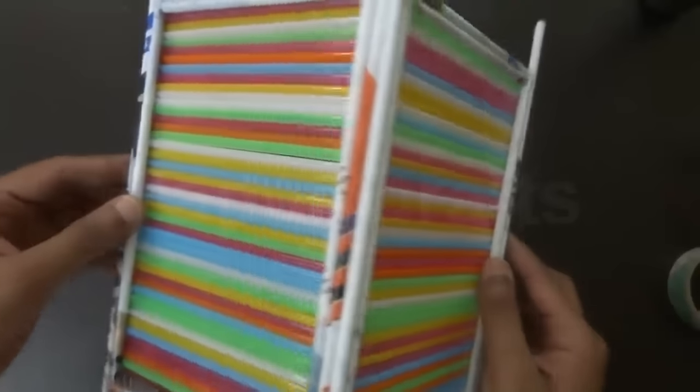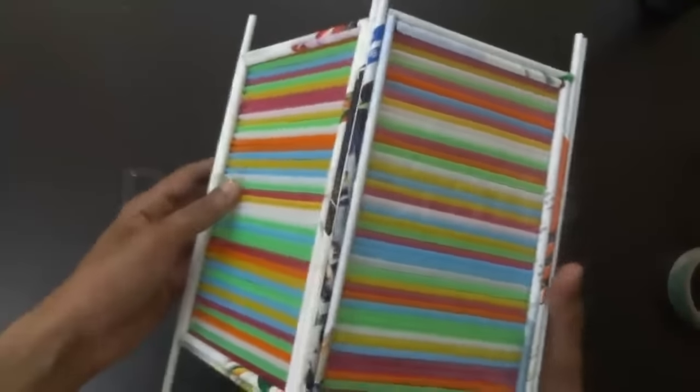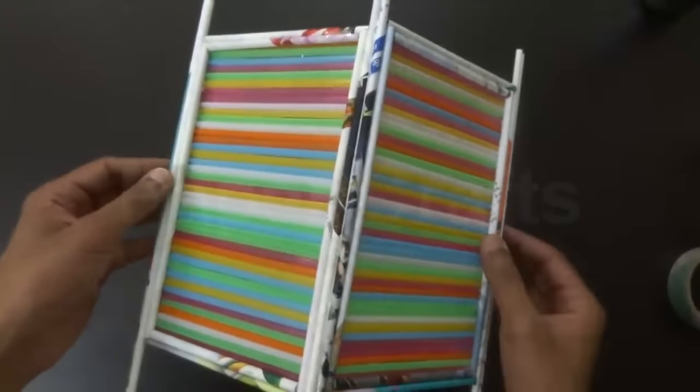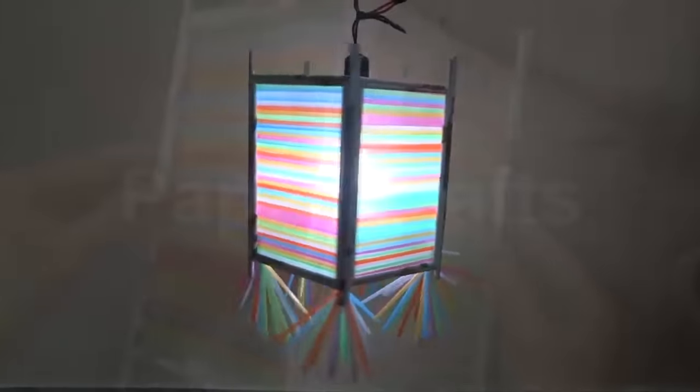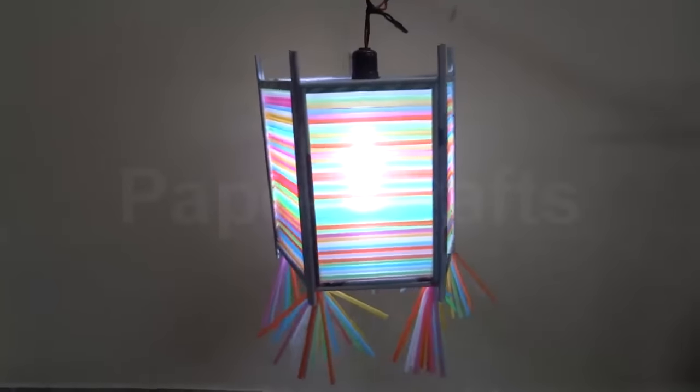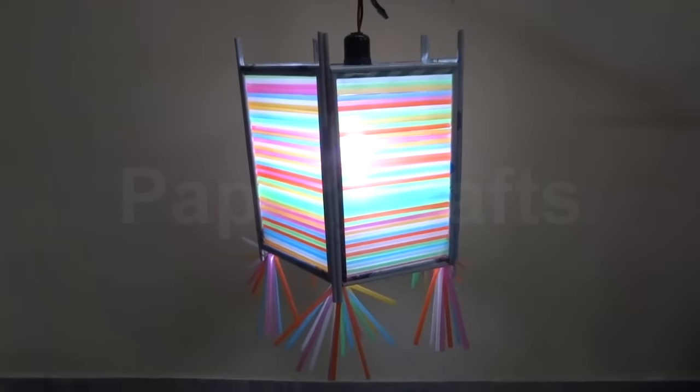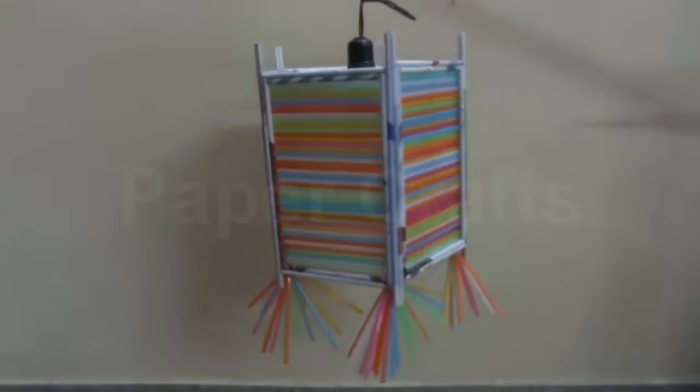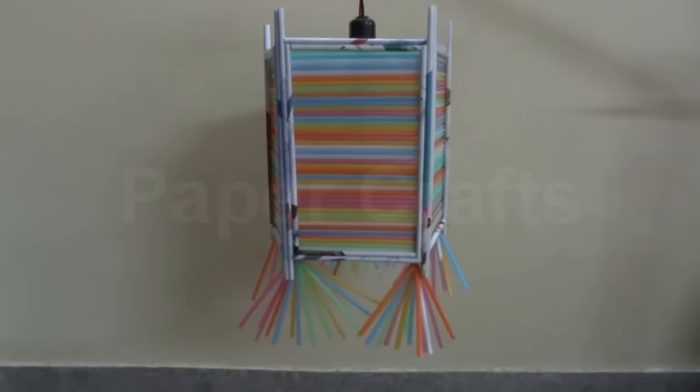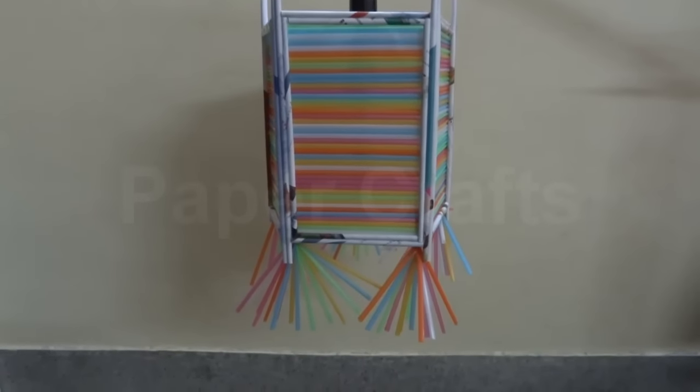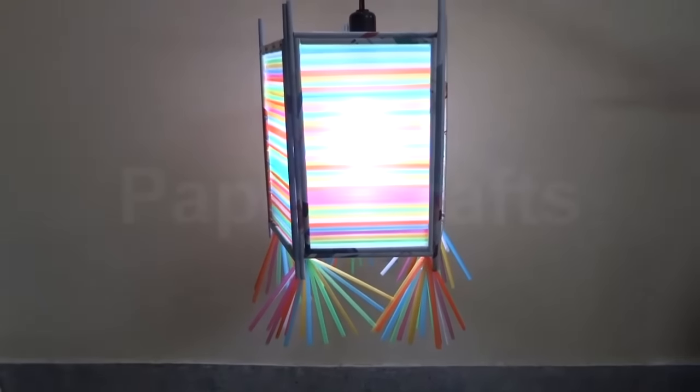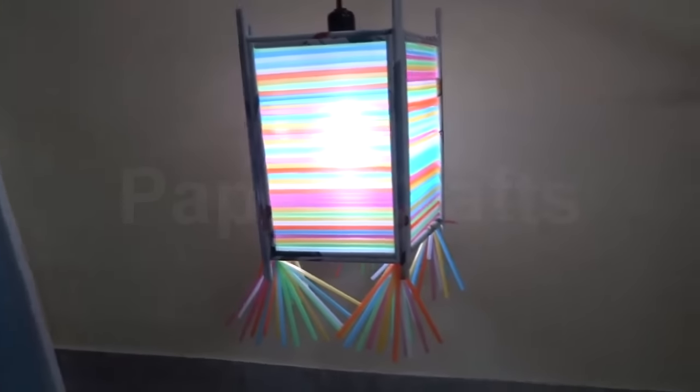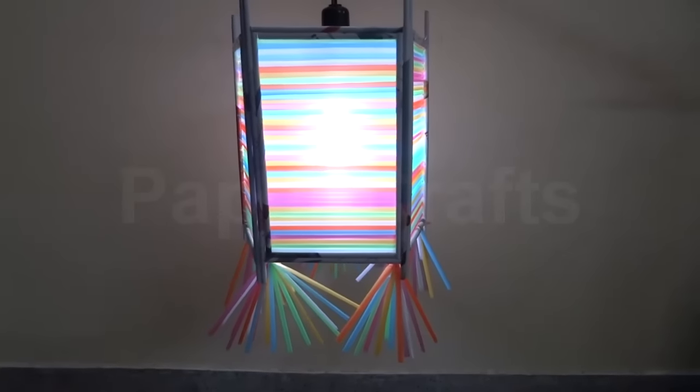Very beautiful multicolored lampshade made out of straws and waste magazine paper. This is how the lamp looks like after you have installed the light. I have also decorated the bottom of the lamp with some flowers of straws. The lamp looks beautiful when the light is turned on.